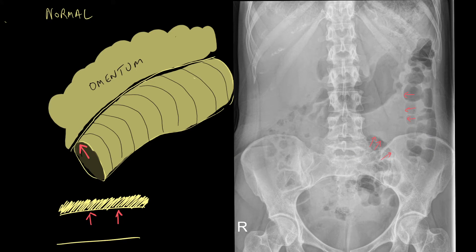On a normal abdominal film, you expect to see an interface because the gas in the lumen has a different radiographic density to the bowel wall, which merges with omentum or adjacent bowel. On the x-ray you see an interface between the gas in the lumen and the omentum or abdominal soft tissue. This is represented by a line which has a sharp interface on one side, but not the other.